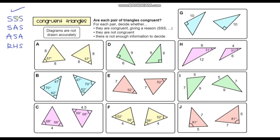So if we're given any of that information, then we know for sure that those two triangles are congruent. But we also looked at some other combinations — AAA and ASS. We went through some examples and showed that if we're given just this information, we don't know for sure whether those two triangles are congruent. They could be, but we just need some more information, so I'll put a question mark here.